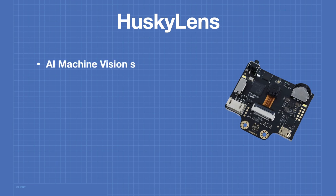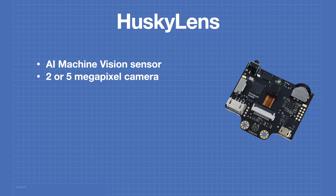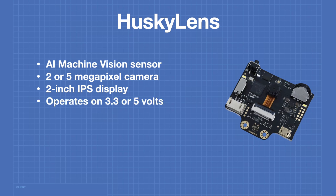The Husky Lens is an artificial intelligence machine vision sensor. It's available in two models: the regular Husky Lens with a 2 megapixel camera, or the Husky Lens Pro with a 5 megapixel camera. Both models feature a 2 inch IPS display. The Husky Lens operates on either 3.3 or 5 volts, making it suitable for virtually any microcontroller or microcomputer.